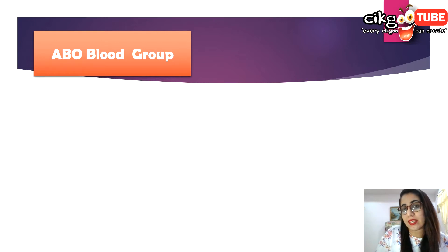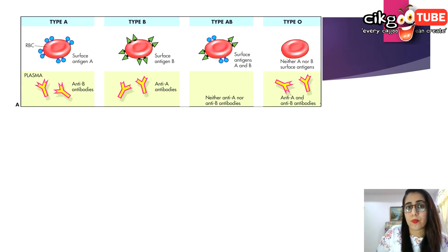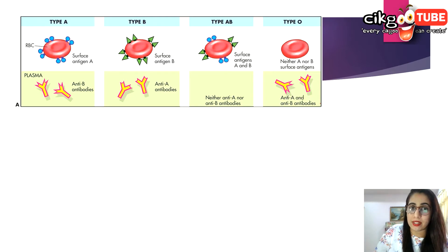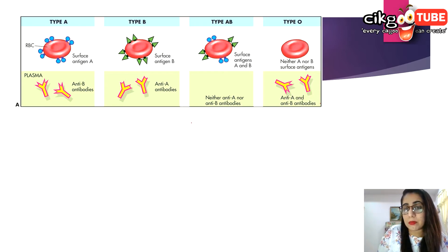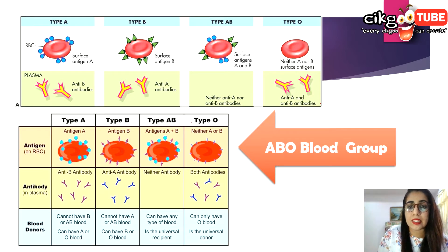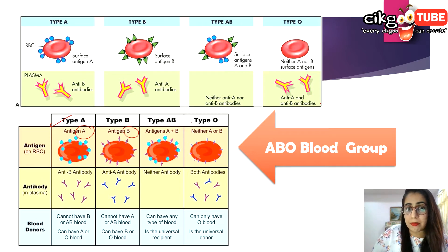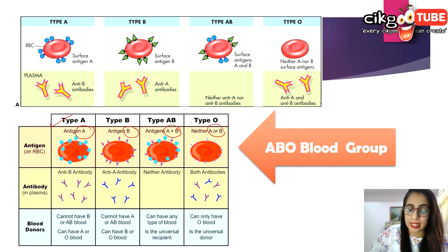Based on the ABO blood system, human blood is classified into four different groups: A, AB, B, and O. The classification is based on the type of antigens present on the surface of the red blood cells and the types of antibodies present in the blood serum. Type A has antigen A, type B has antigen B, type AB has both A and B, and type O has no A or B antigens on the red blood cells.